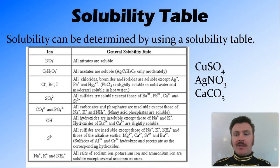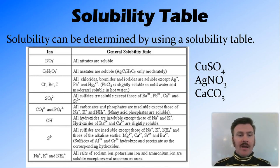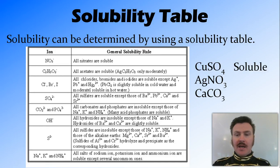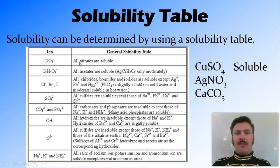Now, how we use our table — let's go through a couple of examples. The first one is copper sulphate. We go into our table over to sulphate. All sulphates are soluble except for barium, lead, calcium, and strontium. Copper sulphate is not barium, lead, calcium, or strontium, so therefore it's going to be soluble. The next one is silver nitrate. Go over to nitrates — all nitrates are soluble, no exceptions. That one will be soluble.